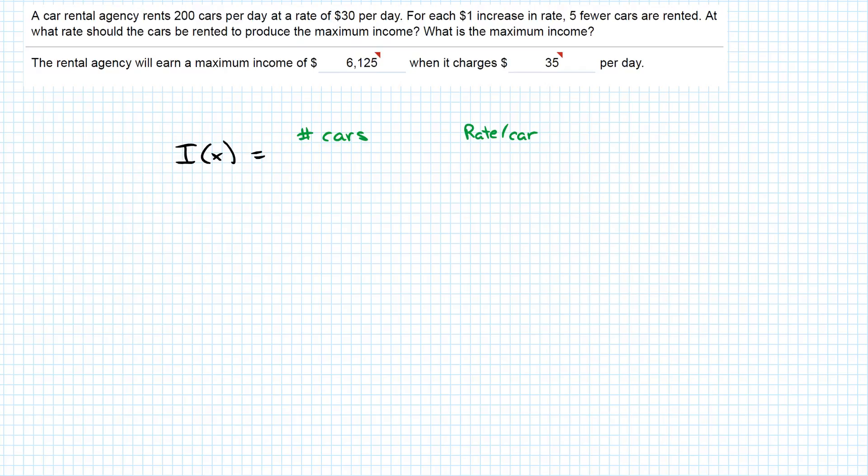Let's figure that out, because that function—number of cars times rate per car—tells me exactly how much money they're getting. It says they start out with 200 cars, so I'll do 200 here. The starting rate is $30 per car, so I'm going to put $30 here.